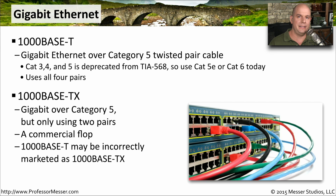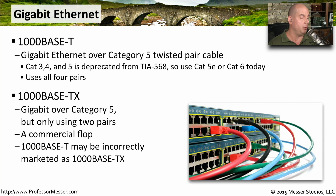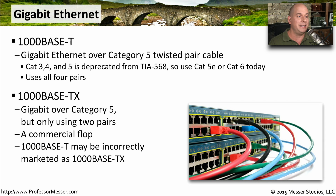A Gigabit standard that didn't take off was 1000BaseTX. This was also Gigabit over Category 5, but it only used two pairs instead of the four pairs used with 1000BaseT. It never really took off, and you can't find anyone selling 1000BaseTX. However, because 100BaseTX was the standard name for older 100 megabit Ethernet, you'll often see 1000BaseT incorrectly called 1000BaseTX — when in reality they are two very different standards.